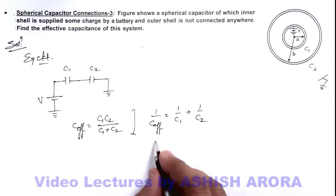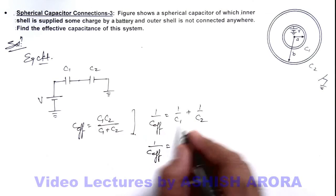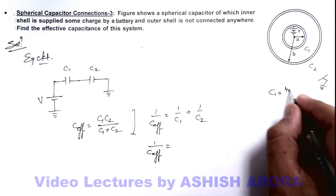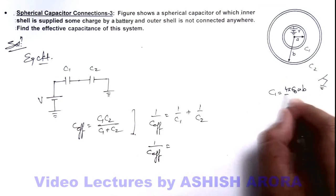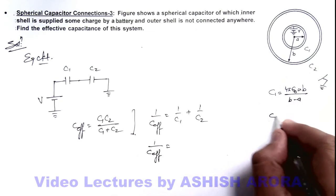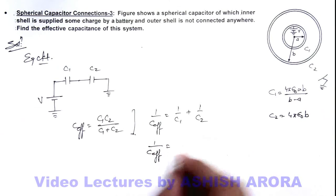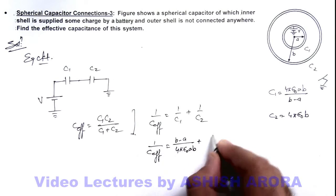So here we can see the value of 1 by C effective can be written as the values of C1 and C2 we already know. C1 is 4π epsilon not ab upon b minus a, and C2 is 4π epsilon not b. We substitute the values: b minus a by 4π epsilon not ab plus 1 by 4π epsilon not b.